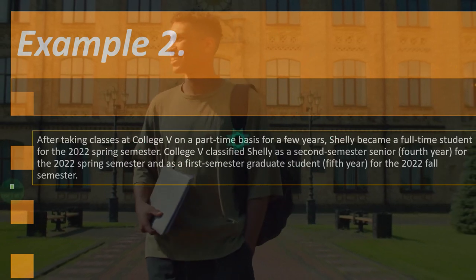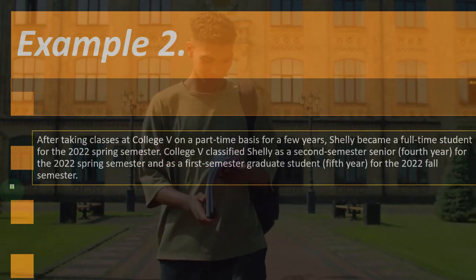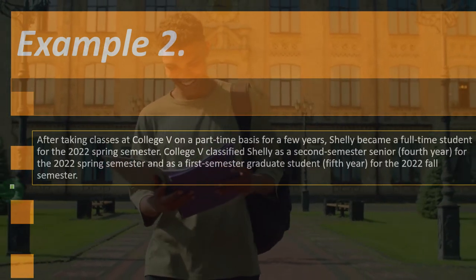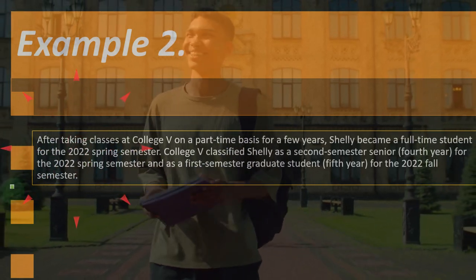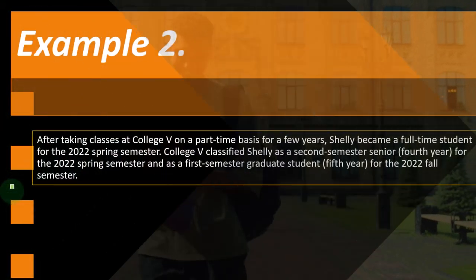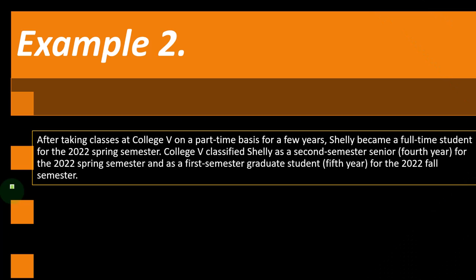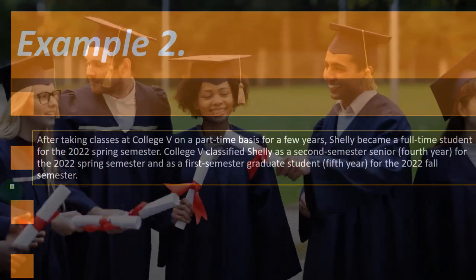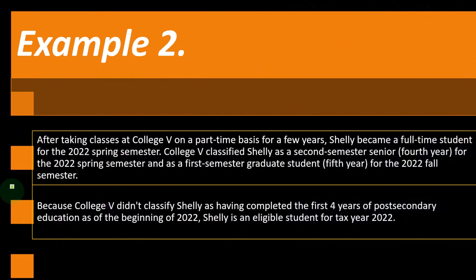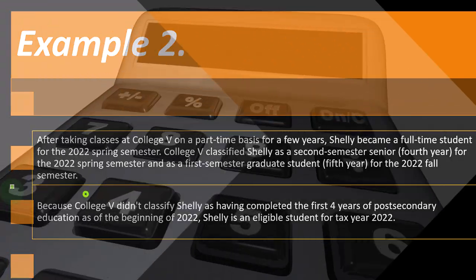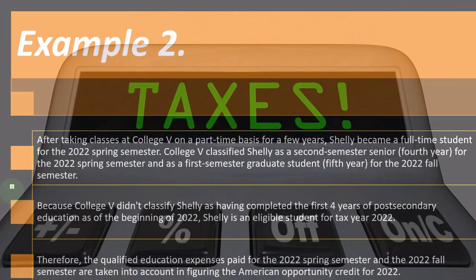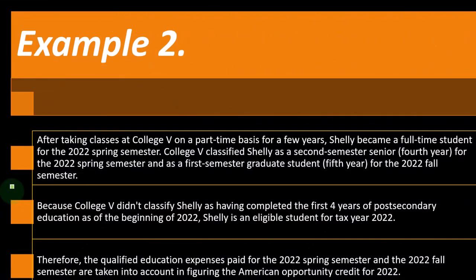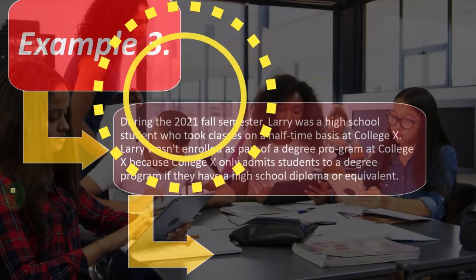Example two: After taking classes at College V on a part-time basis for a few years, Shelley became a full-time student for the 2022 spring semester. College V classified Shelley as a second semester senior — fourth year — for the 2022 spring semester, and as a first-year graduate student — fifth year — for the 2022 fall semester. Because College V didn't classify Shelley as having completed the first four years of post-secondary education as of the beginning of 2022, Shelley is an eligible student for tax year 2022, and qualified expenses for both semesters are taken into account.